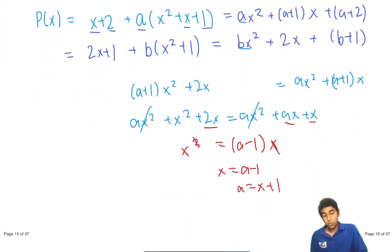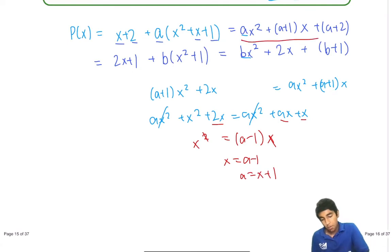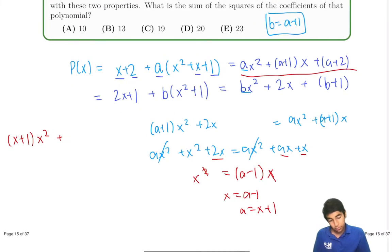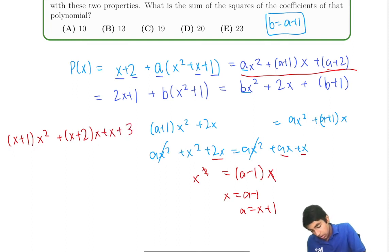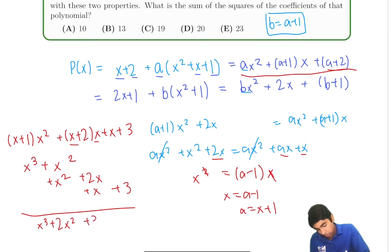So a is x plus 1, then we can plug it in here to get our polynomial. x plus 1 x squared plus a is x plus 1. So x plus 2x and then again because a is x plus 1, this is x plus 3.